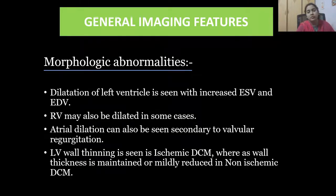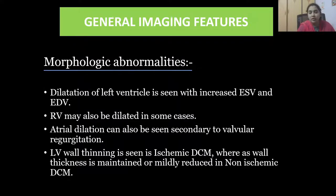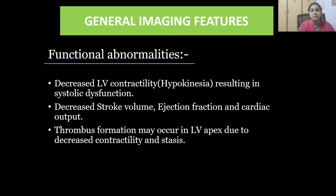General morphological abnormalities: dilatation of left ventricle with increased end-systolic and end-diastolic volume. Right ventricle may also be dilated in some cases. Atrial dilatation can be seen secondary to valvular regurgitation. Left ventricular wall thinning is seen in ischemic dilated cardiomyopathy, whereas wall thickness is maintained or mildly reduced in non-ischemic DCM. Functionally, decreased LV contractility — hypokinesia — results in systolic dysfunction, with decreased stroke volume, ejection fraction, and cardiac output. Thrombus formation may occur at the LV apex due to decreased contractility and stasis.